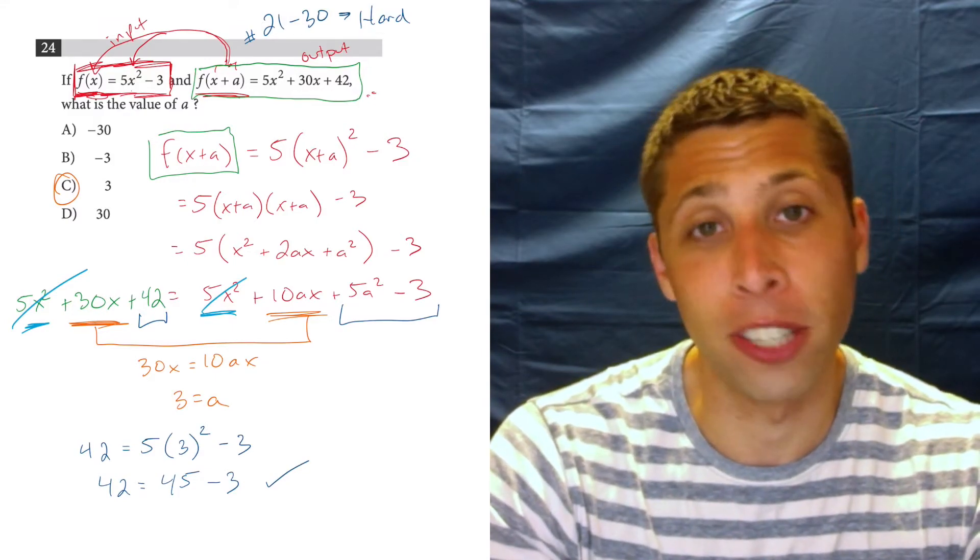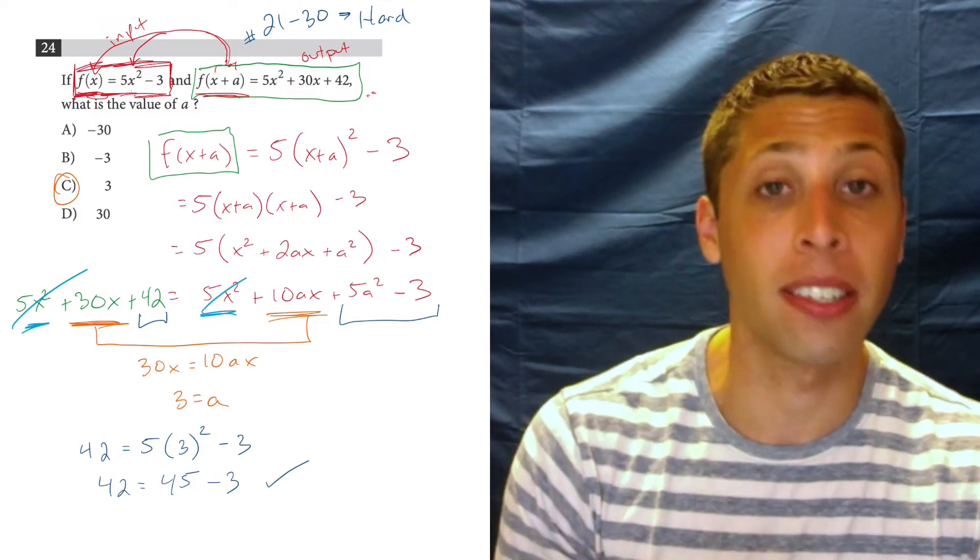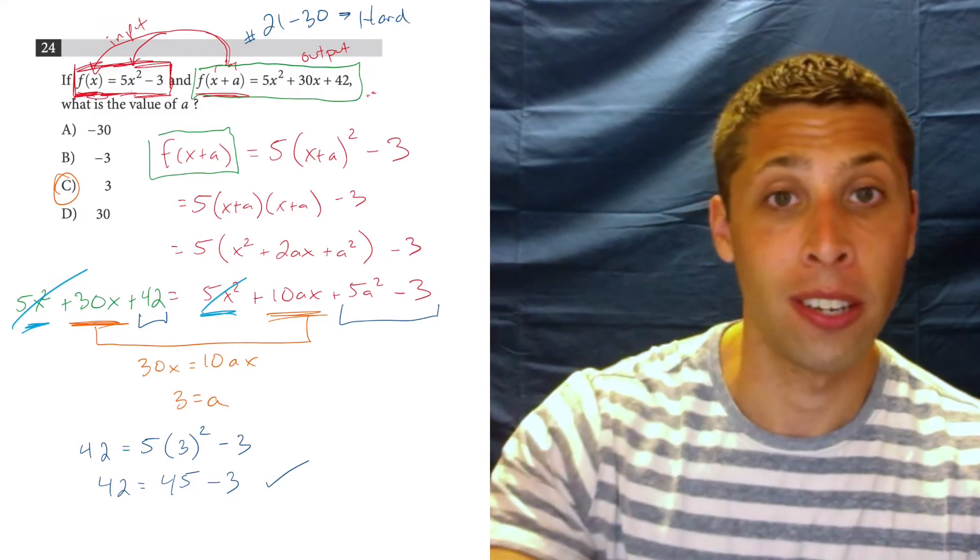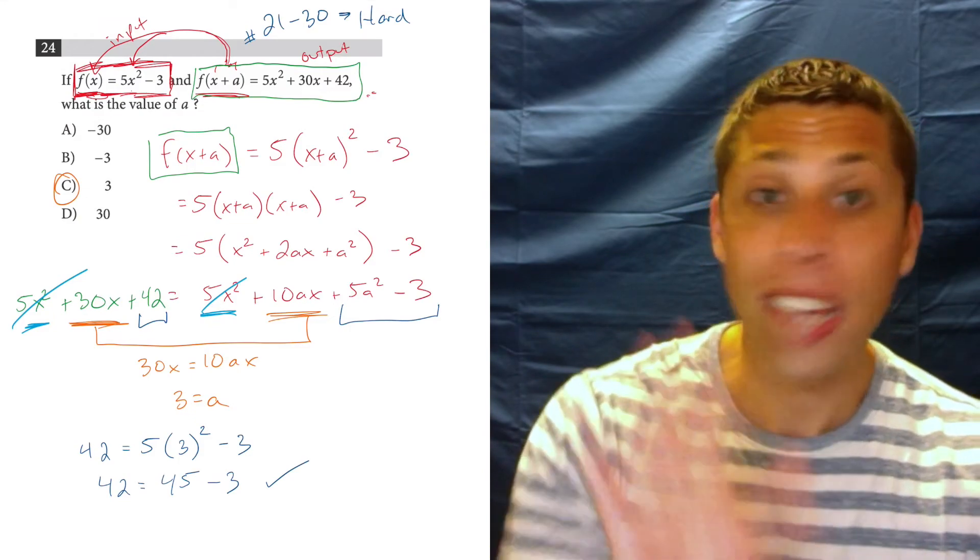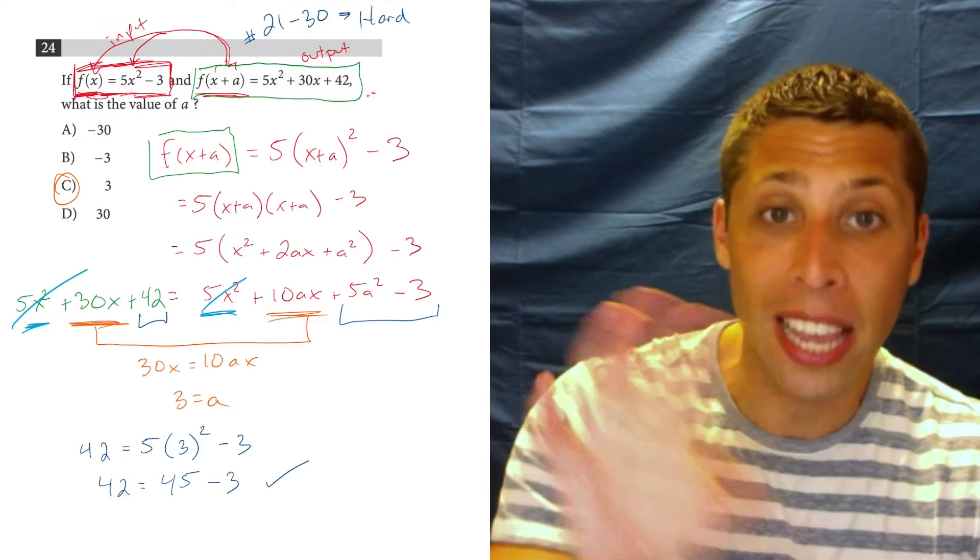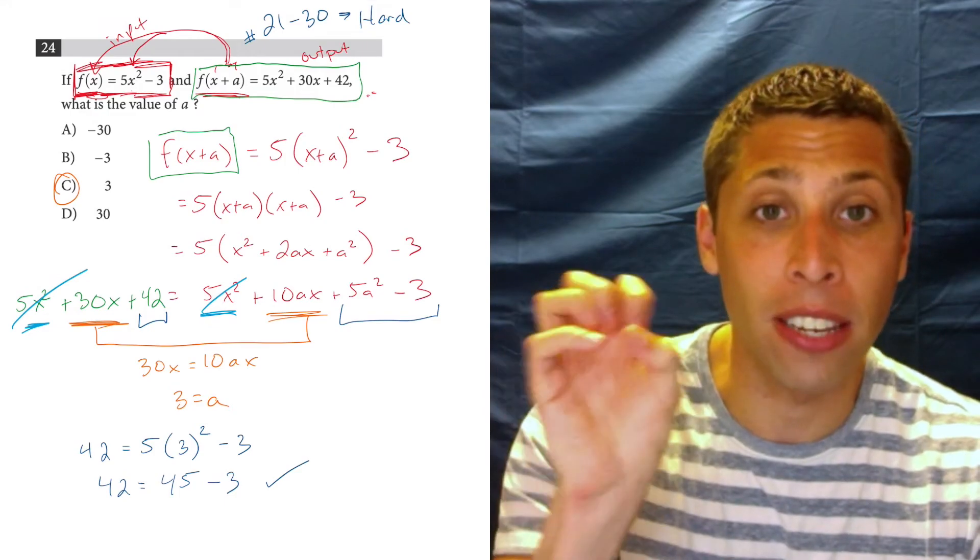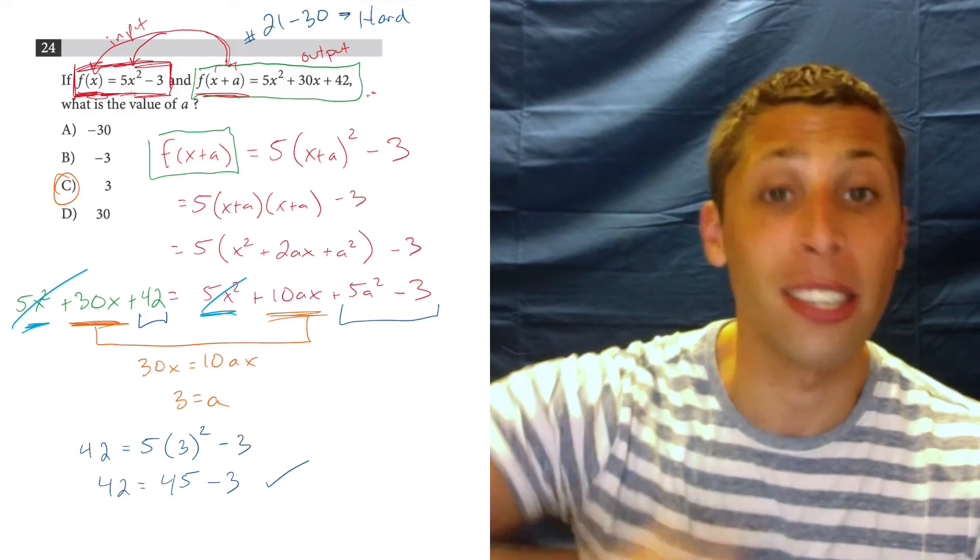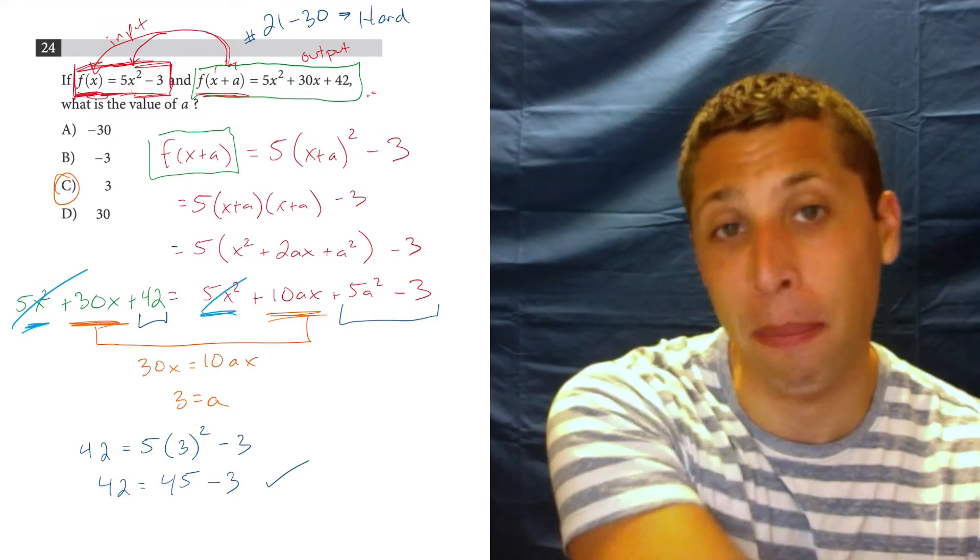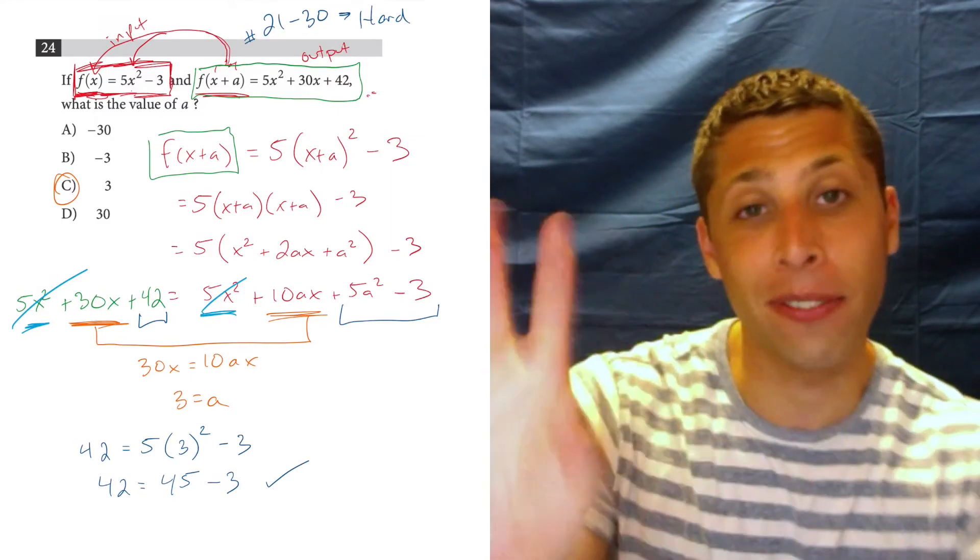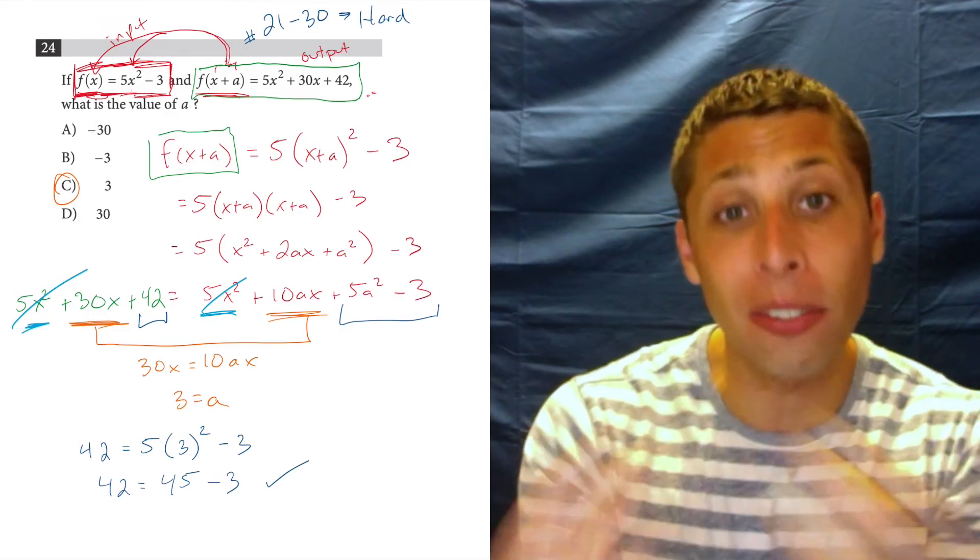If you are shooting for an 800, you need to understand how this works and that basically the input may look different, but the output should be the same. Because the thing that's constant here is the f. The function, the thing that we're doing to the number is the same. And so we should be able to put something in and get the same thing out no matter what, even if the input looks different in two different cases.